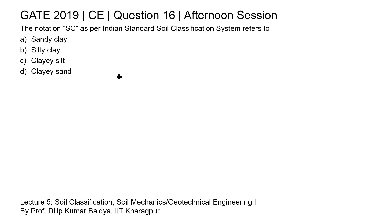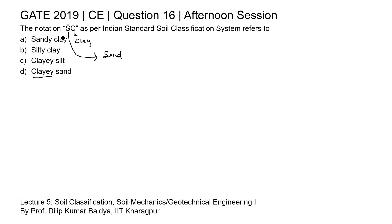In this question we need to find the notation for SC. C stands for clay and S stands for sand. We write C first, so this is clay, and then S for sand — giving us clay sand. So option D will be the right answer for this question.